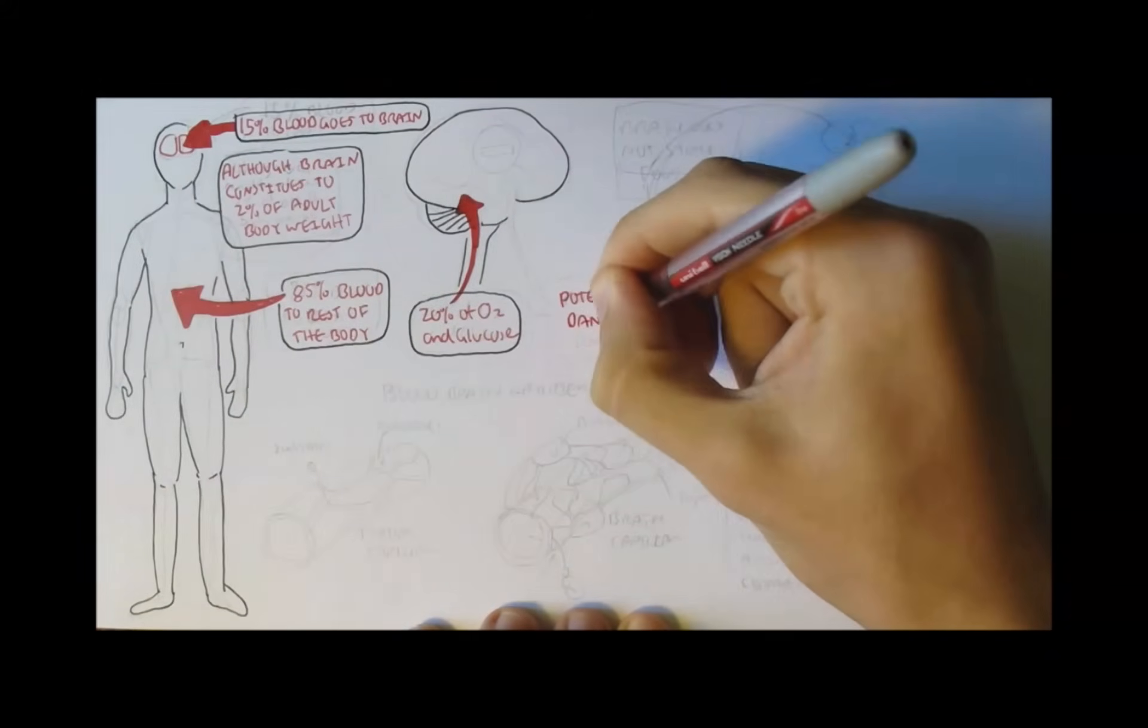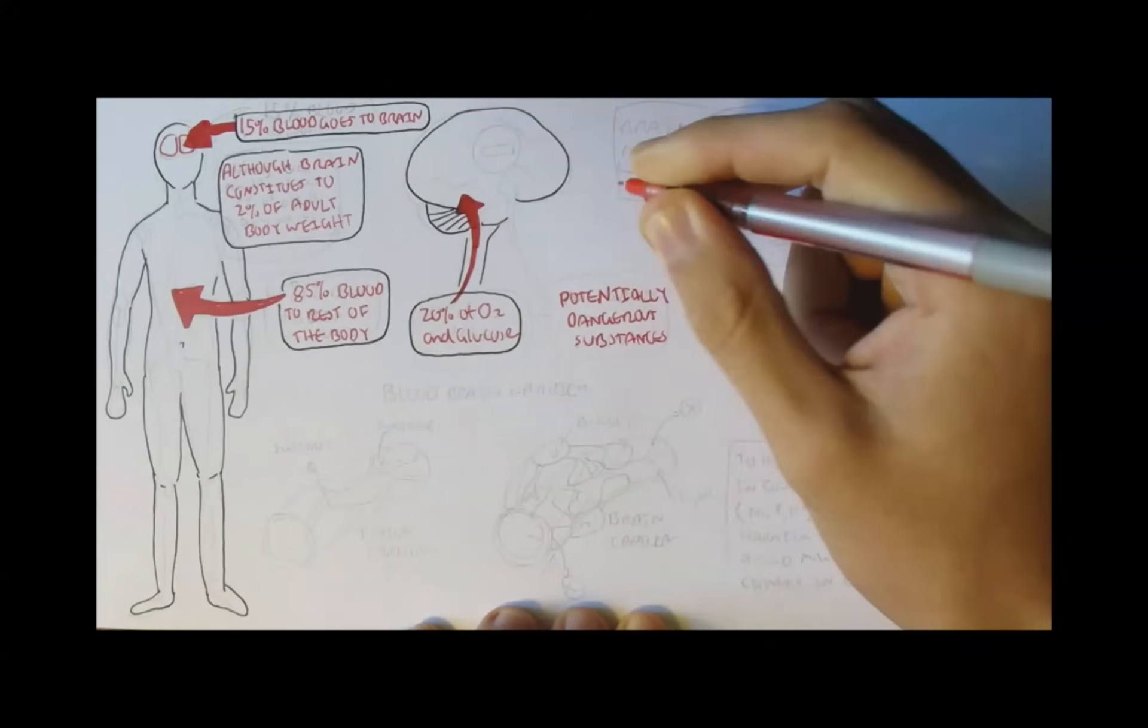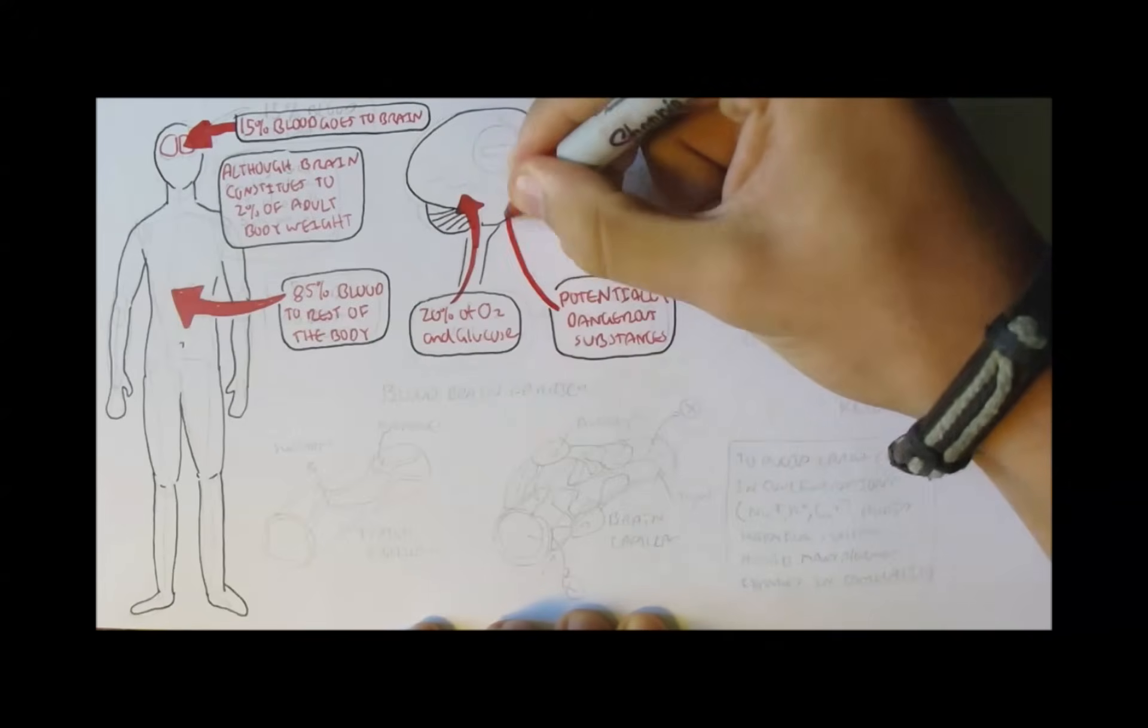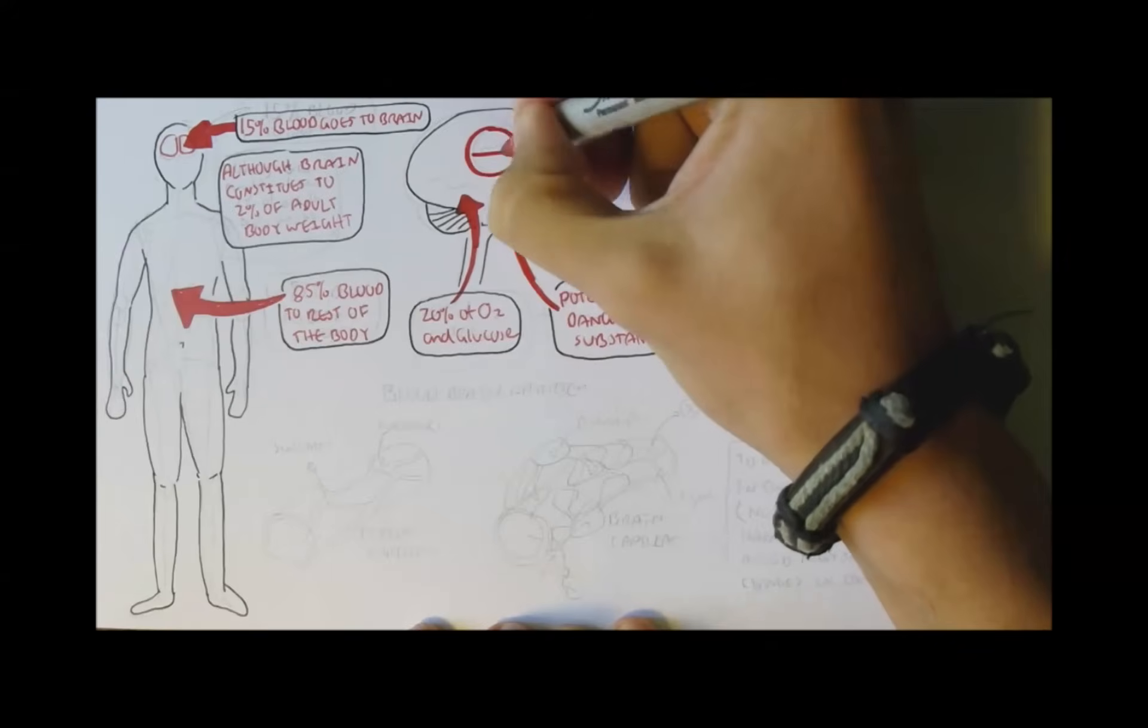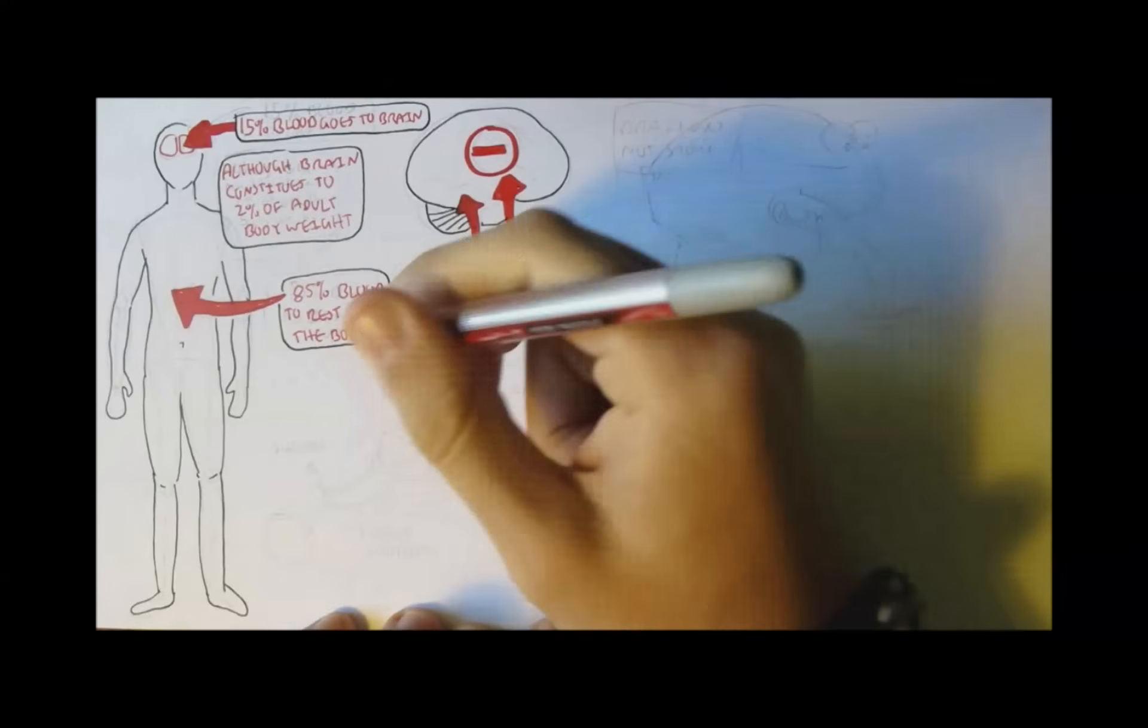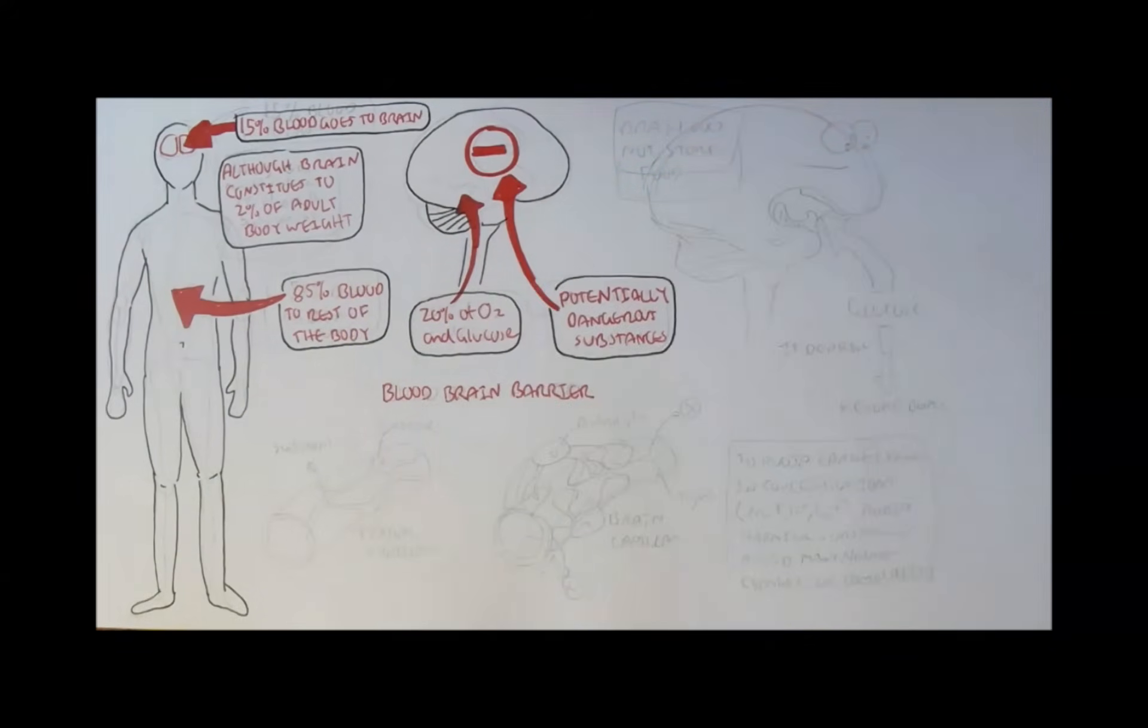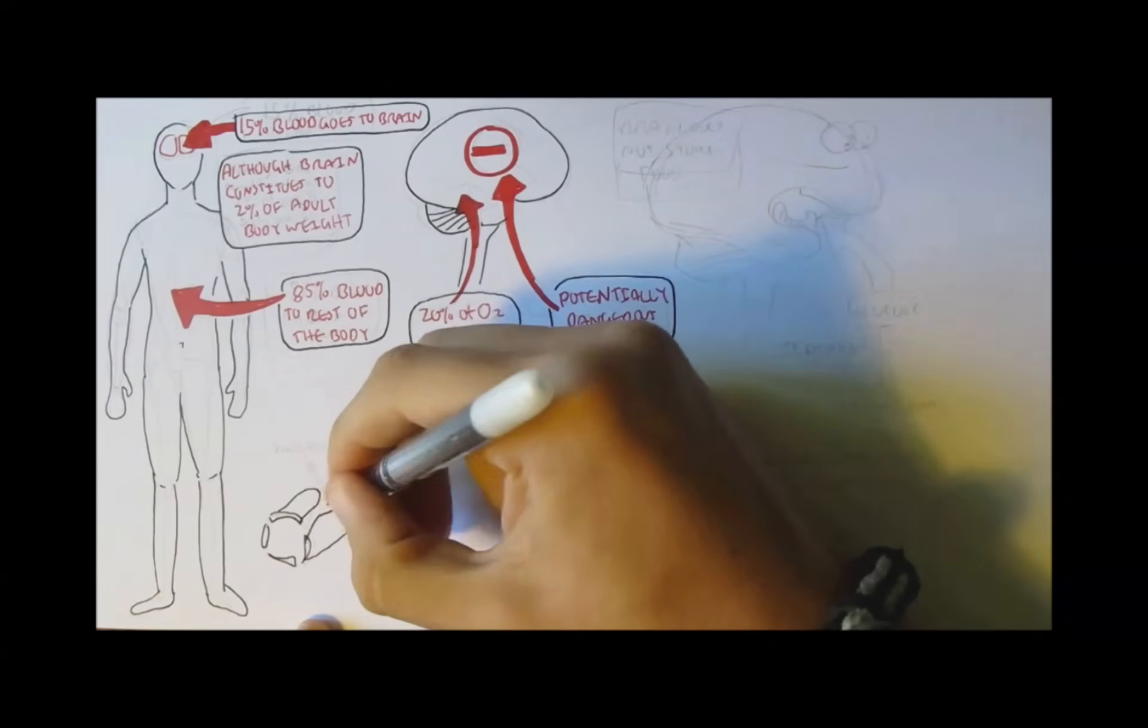But what if these substances being brought to the brain are potentially harmful, especially if they travel via blood vessels? Well, the brain has a protective barrier, which only allows necessary molecules to pass through. This is known as the blood-brain barrier.